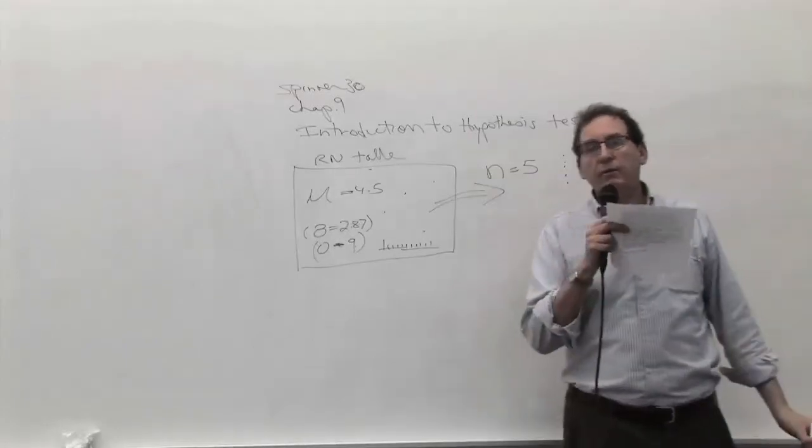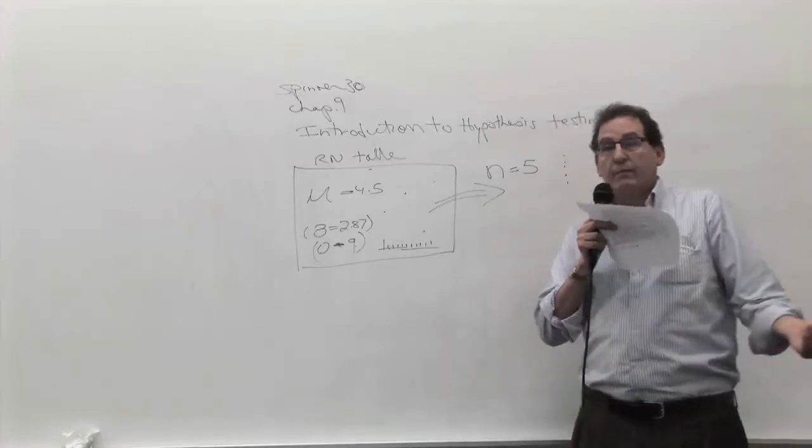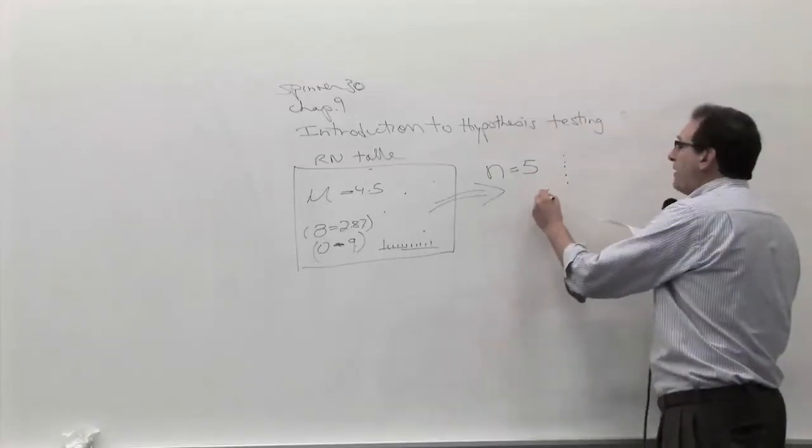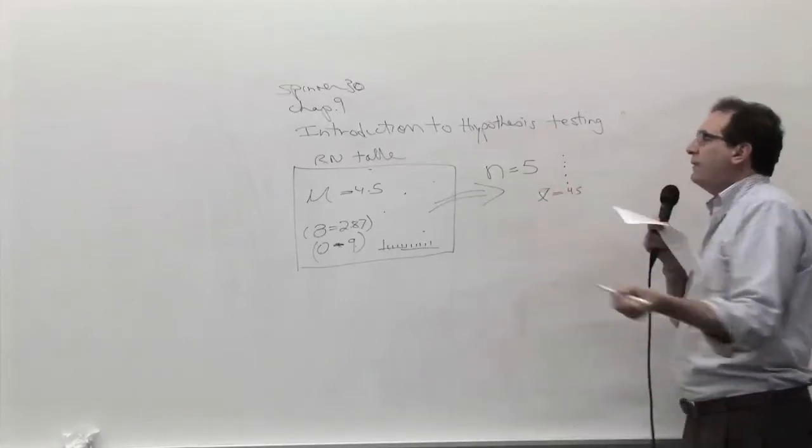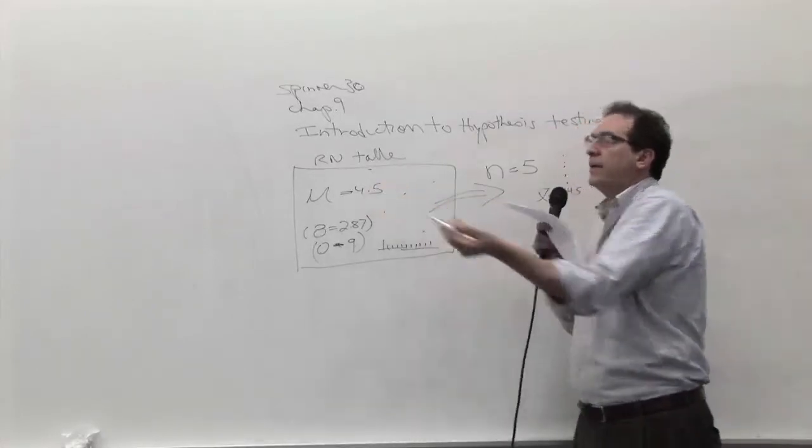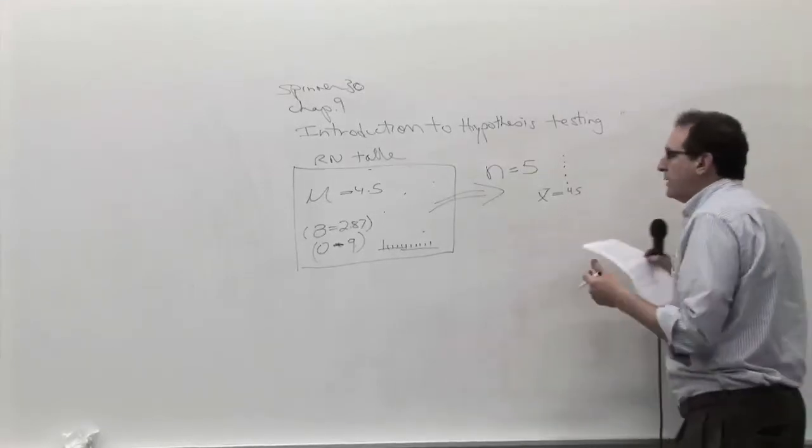And how do you think you're going to process those five numbers? What's the most logical thing to do with the five numbers? You want to calculate? Yeah. You want to get the average. The average is the key number here. So let's say the average came out to 4.5. Well, obviously, that means your table is okay. No one's going to say that proves the table's bad.